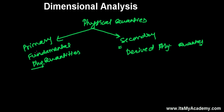When learning about the international system of units, you must have learned about two types of units: fundamental units and secondary units. These are determined completely based on fundamental physical quantities and secondary or derived physical quantities.